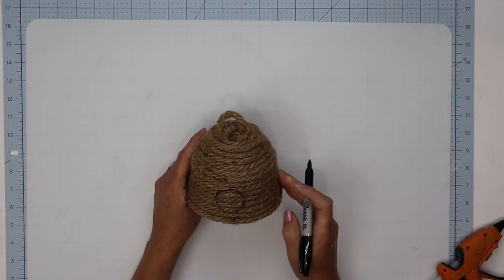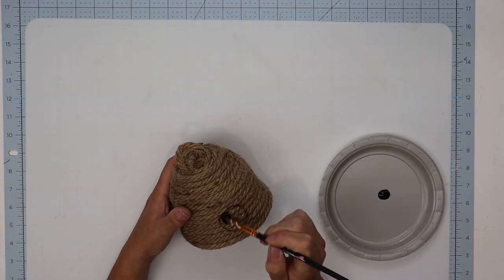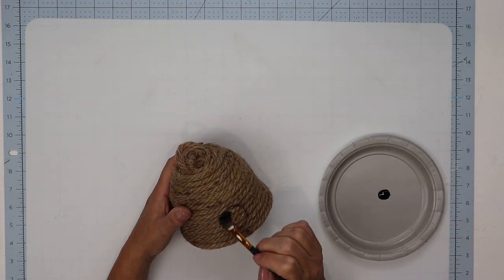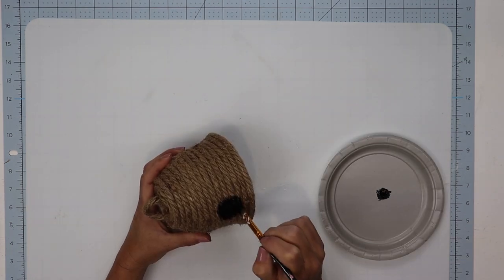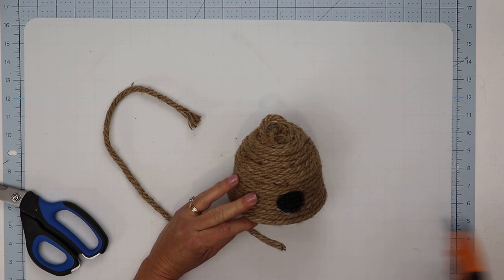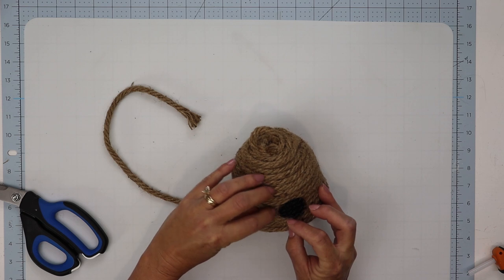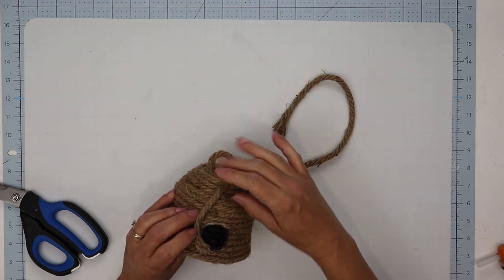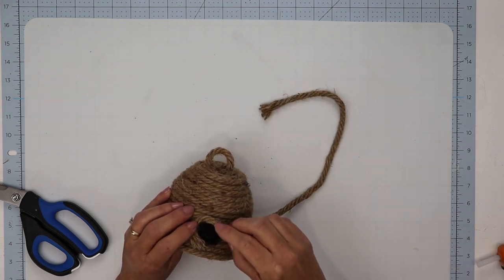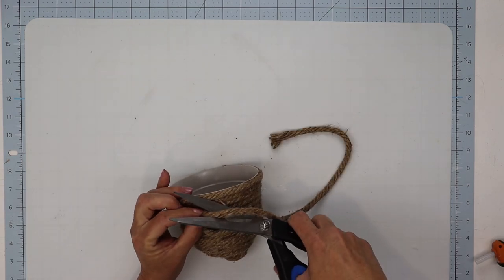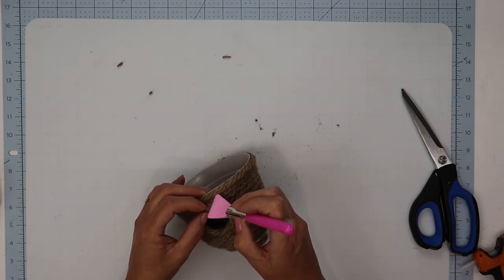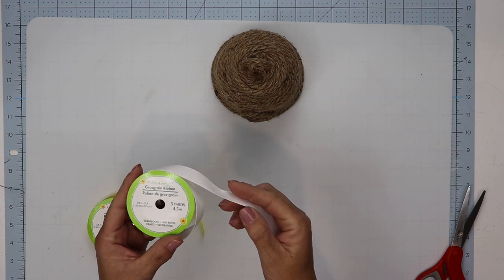Using a black Sharpie on the opposite side of where we started our seam, because I want the seam to be on the back, I drew a circle and then painted that in with some black chalk paint. Then took some of that extra rope to glue around for the opening of our beehive. Again, when you get to the end, cut it at an angle so you can glue those two pieces together and it will be seamless.